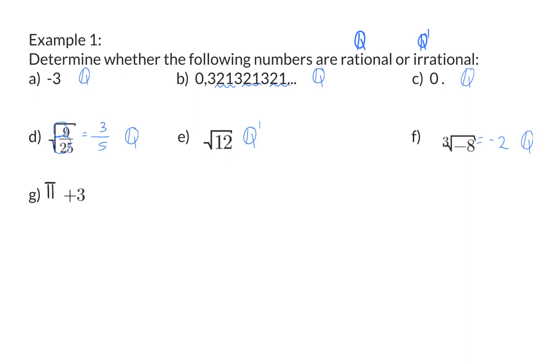In G, we have pi plus 3 and we know that pi is an infinite decimal. And if we add another 3, it stays an infinite decimal and therefore this is an irrational number.